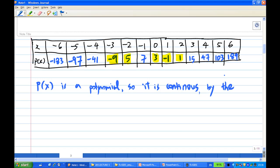So, P(x) is a polynomial and so it is continuous. Therefore, by the intermediate value theorem, P(x) has a root, or zero in this case, between, in this interval.